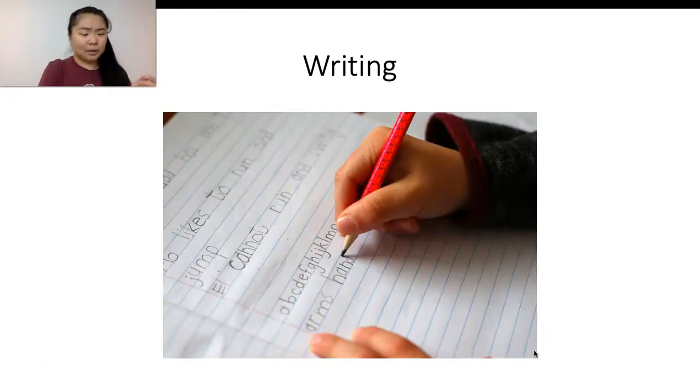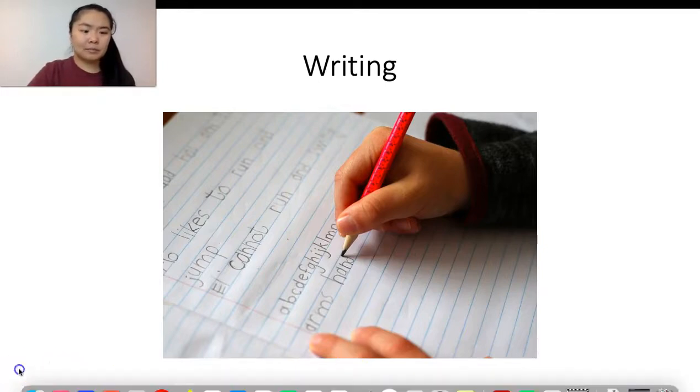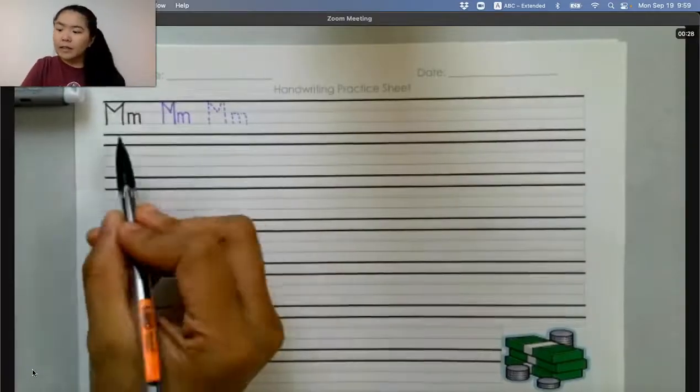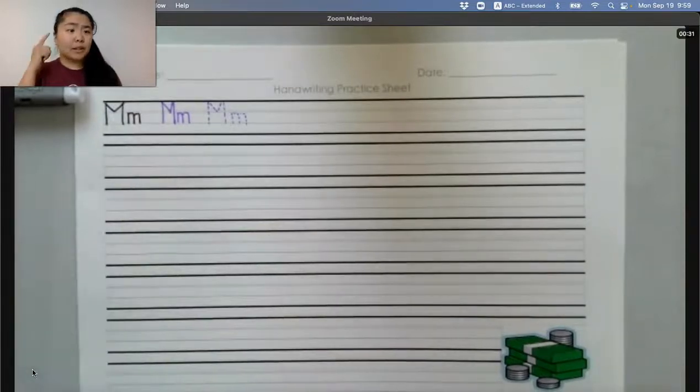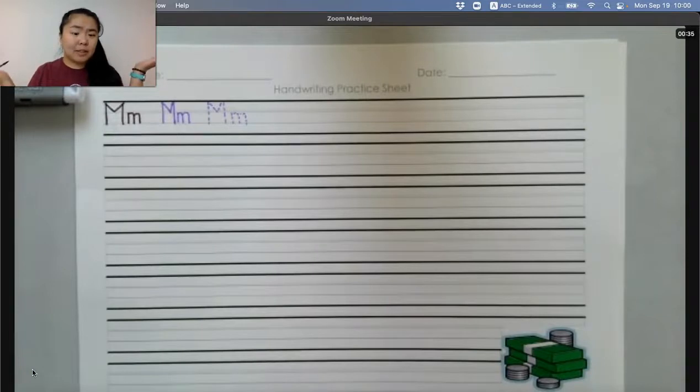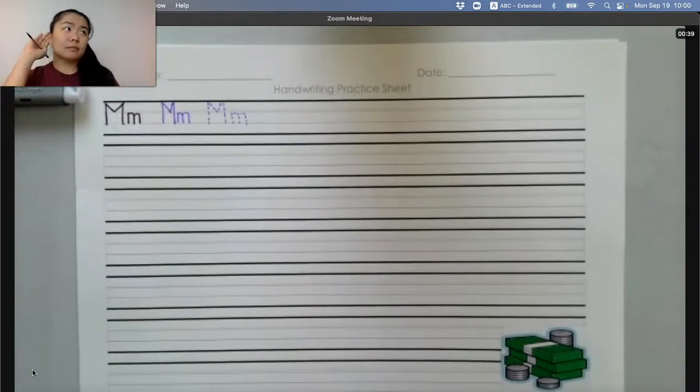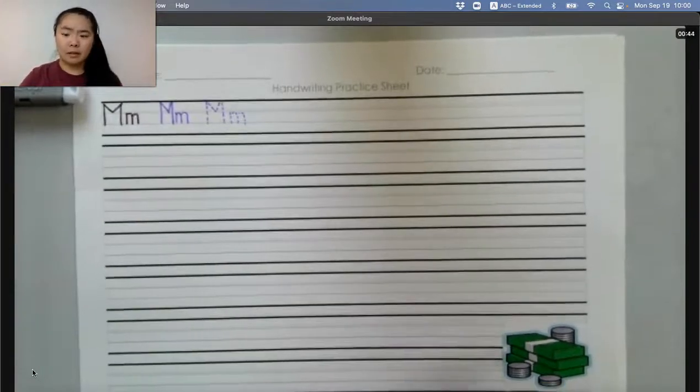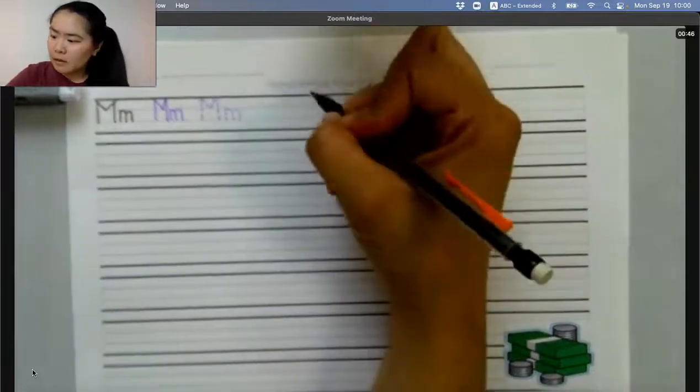Now we're going to practice some writing. So this is M. Can you tell me what sound does M make? Good. M says M like money. Money.